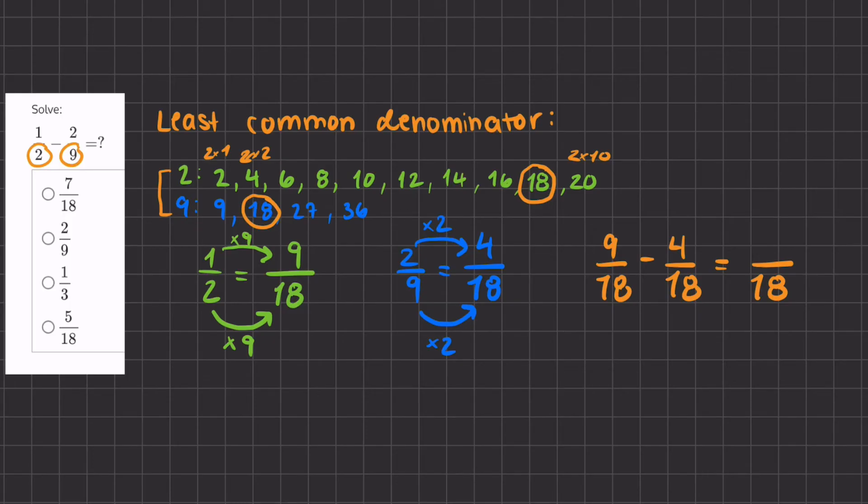So we have 9 minus 4, giving us 5. So our final answer is 5 over 18.